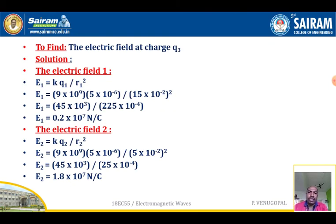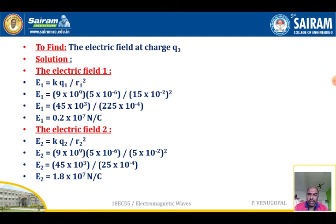You are required to find the electric field at charge Q3. First, find the electric field at Q3 due to charge Q1: E1 equals k times Q1 divided by r1-squared. The distance between Q1 and Q3 is 15 centimeters, that is 15 times 10 to the power minus 2 meters. So E1 equals 9 times 10 to the power 9 times 5 micro-coulombs divided by (15 times 10 to the power minus 2) squared, which gives E1 equal to 0.2 times 10 to the power 7 newtons per coulomb.